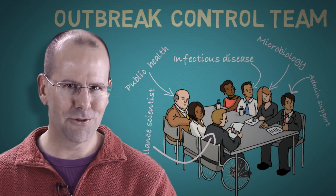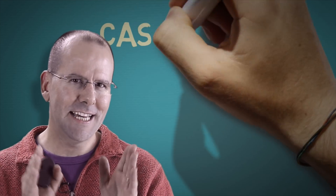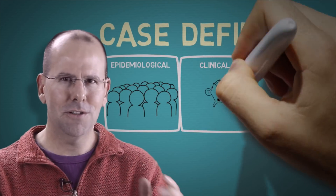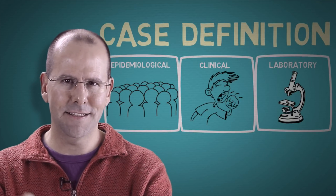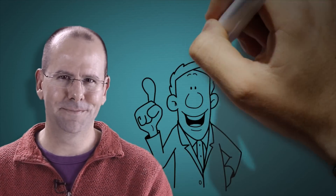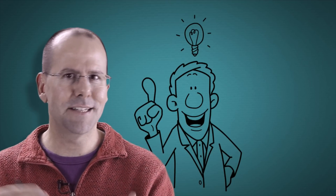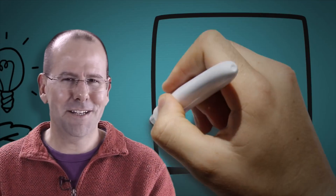One of the first things the outbreak control team does is establish a case definition — the epidemiological, clinical, and laboratory features used to identify cases included in the outbreak. The team also needs to develop a hypothesis of exposure and transmission: how they believe people are getting the disease and how it is spreading, whether person to person. Is this a vector-borne disease like malaria? Is it spreading person to person like measles? Or is there an environmental source like contaminated water with E. coli?